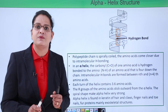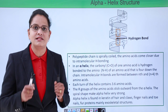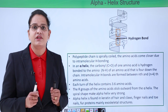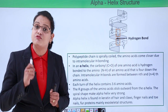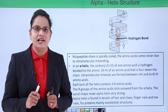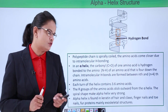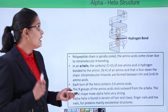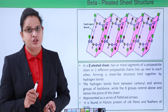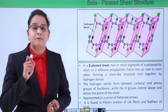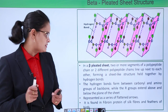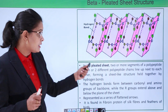Where is the alpha helix found in our body? It is found in keratin — the keratin protein present in nails, toenails, hair, and claws. It is a very hard protein with alpha helix secondary structure. Next is the beta pleated structure.